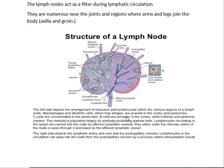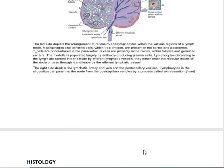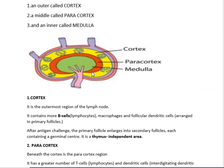Coming to the histology — the internal structure — a section of a lymph node shows an outer collagenous capsule. From the capsule, radial projections called trabeculae arise into the interior. Morphologically, the lymph node is divided into three regions: the outer cortex region, the middle paracortex region, and the completely inner part called the medulla. Unlike the thymus, which has only cortex and medulla, the lymph node has three regions.